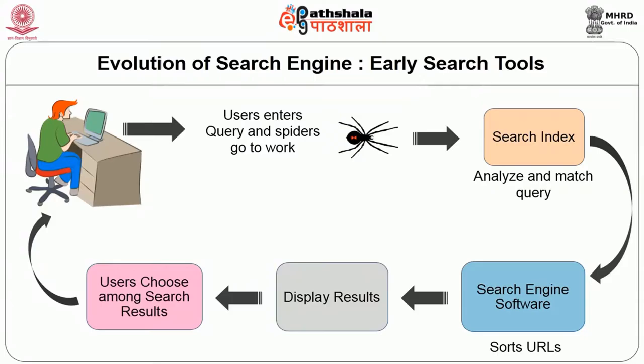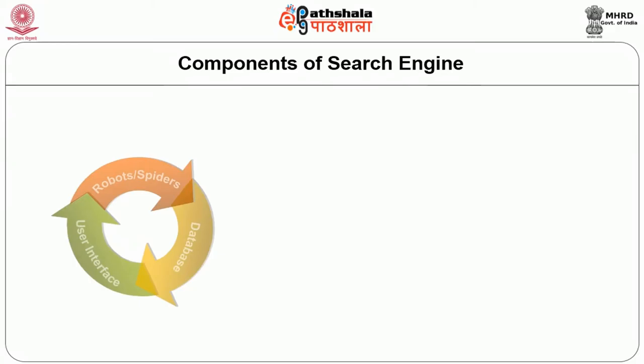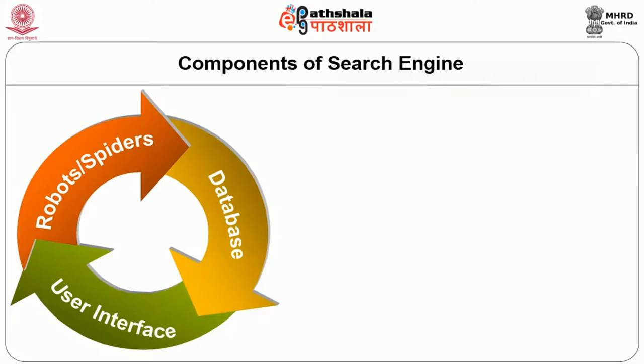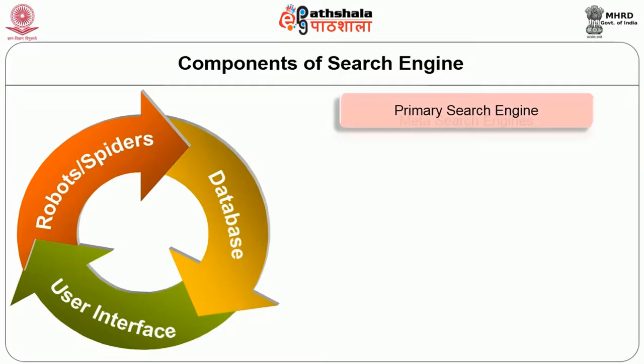A search engine typically has three components: the robots or spiders, the database, and the user interface. Based on functioning, search engines can be categorized into six major types: primary search engines, meta search engines, specialized search engines, subject or web directories, hybrid search engines, and lastly, subject gateways or subject portals.